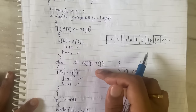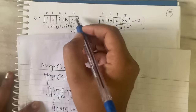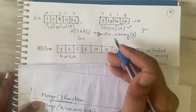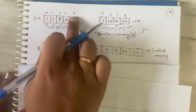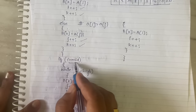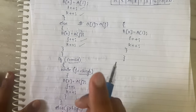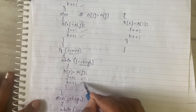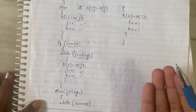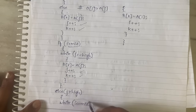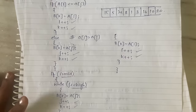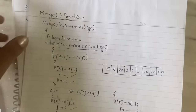After the main loop: if i has exceeded mid (left subarray exhausted) but elements remain in j, copy remaining R[j] elements into B, incrementing j and k. If j has exceeded high (right subarray exhausted) but elements remain in i, copy remaining L[i] elements into B, incrementing i and k. This completes the Merge function.